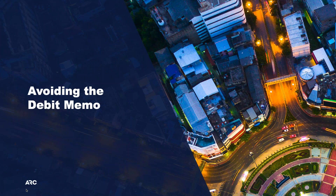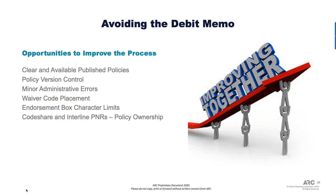Some brief options for avoiding the debit memo. We're always looking for ways to improve with what we do in the debit memo working group. Clear and available published policies — not behind a password-protected website. Version control was a big topic: while some airlines are good at putting version controls in their travel policies, flex policies, and exception policies, as conditions evolve you need to be sure you can communicate what was available at the time your ticket was issued, as opposed to two weeks later when it looks very different.